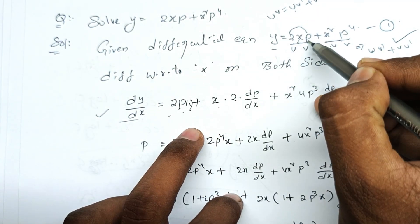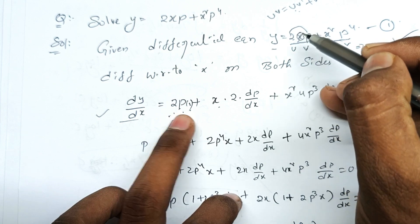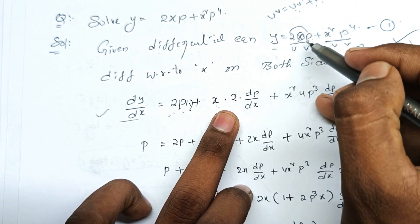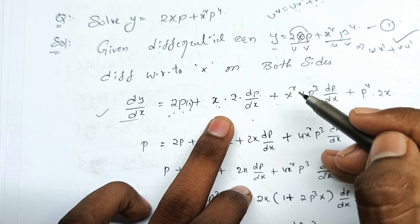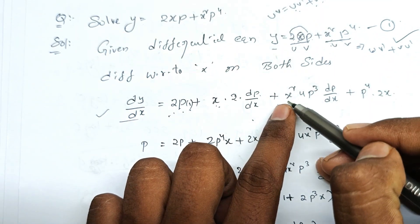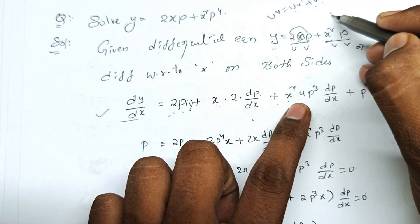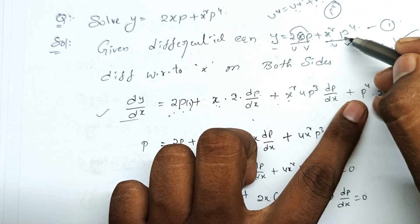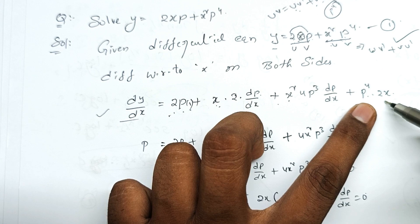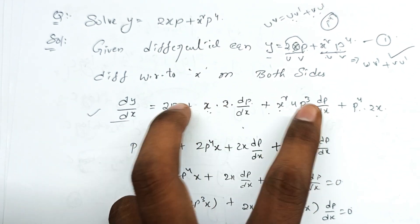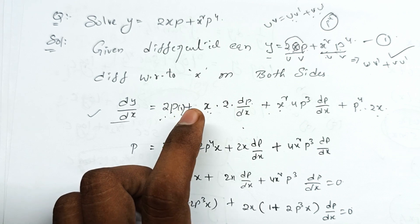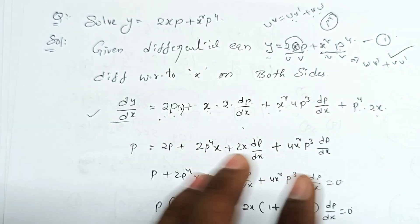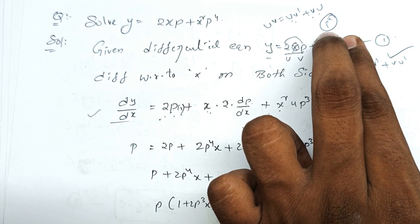UV is equal to uv' plus vu'. x is the derivative of 1 — this is my formula. So, u and the first 2p — we can analyze. v's and x is the derivative of 1. Plus, v and x is the derivative of 2. u's and 2p is the derivative of 2 — 2 into p is the derivative of dp by dx. Plus, x squared is the derivative of 2x, p power 4. p power 4 is the derivative of 4p cubed. x is the derivative of dp by dx. x squared is the derivative of 2x. This is the first line of uv' plus vu'. These are the two formulas — the UV formula applied twice.